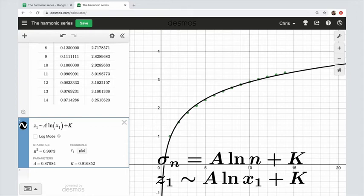So let's think about this for a second. If the partial sums of this series really go up like the logarithm function, well, that's pretty strong evidence that the sequence of partial sums diverges.